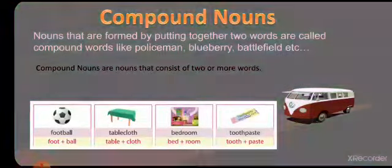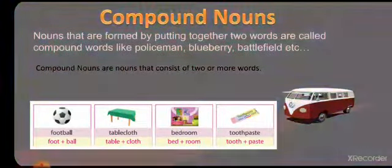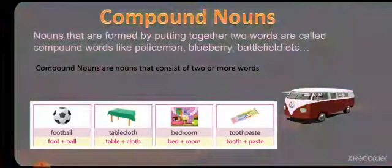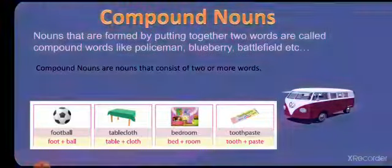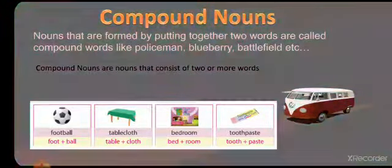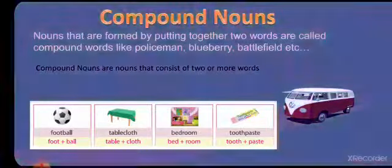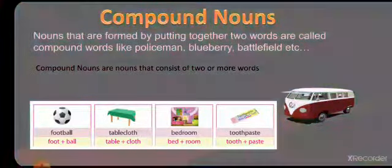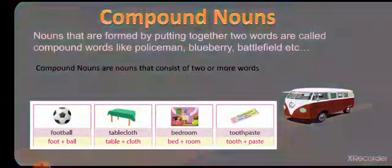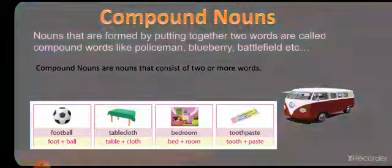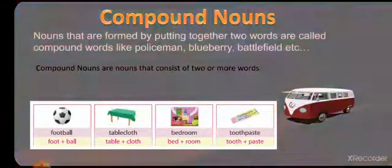Compound nouns are nouns formed by putting together two words. For example: policeman, blueberry, battlefield. Police and man make one word — policeman. Blue and berry make one word — blueberry. Compound nouns can consist of two or more words: football (foot + ball), tablecloth (table + cloth), bedroom (bed + room), toothpaste (tooth + paste).